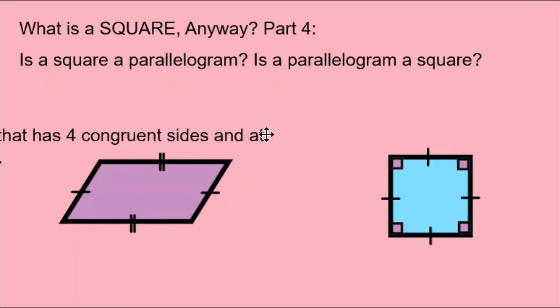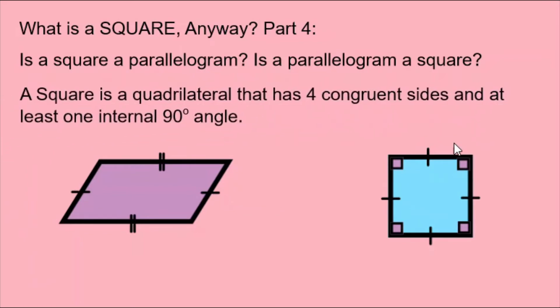Let's look at the definition of a square. A square is a quadrilateral that has four congruent sides and at least one internal 90 degree angle.